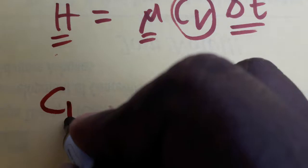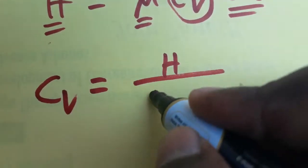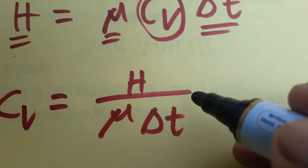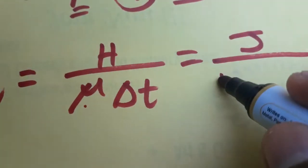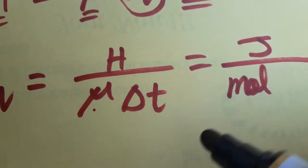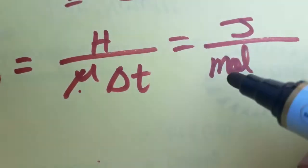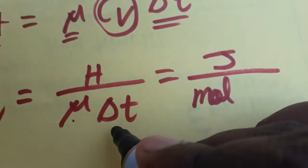So Cv is equal to H divided by mu times change in temperature. H is the heat energy, the SI unit will be joules. It's a mole we are taken as molar mass instead of taking kg, you can take it as a mole, and change in temperature will be kelvin.